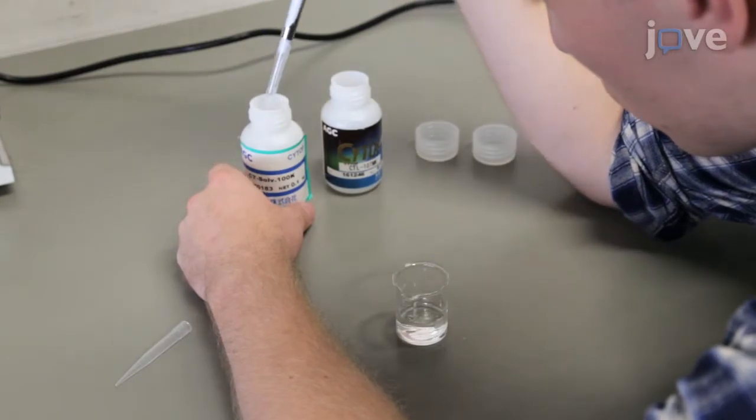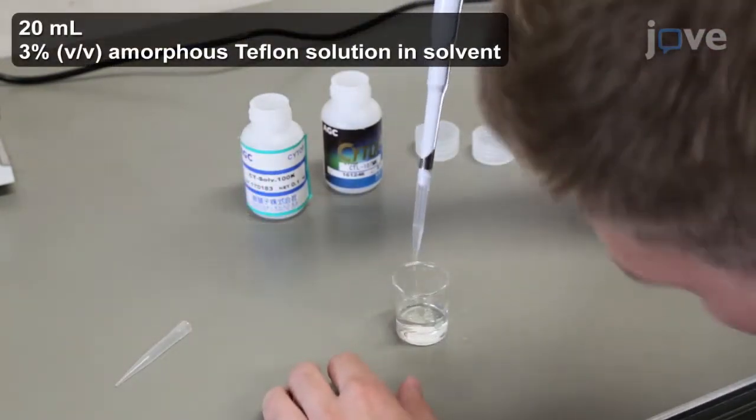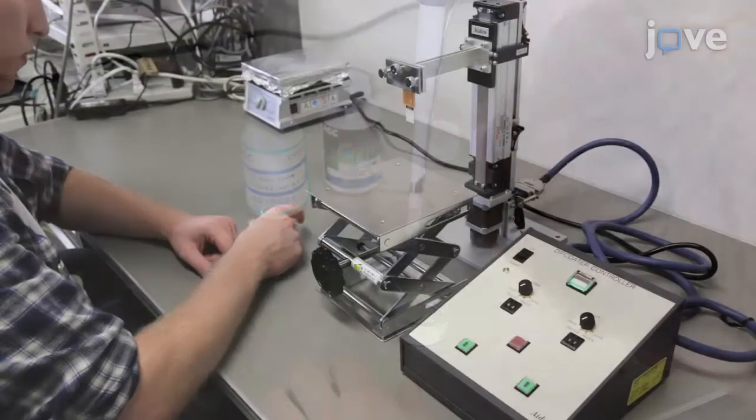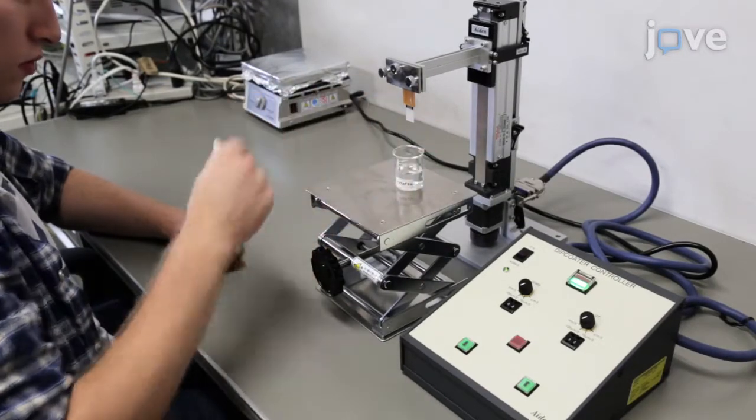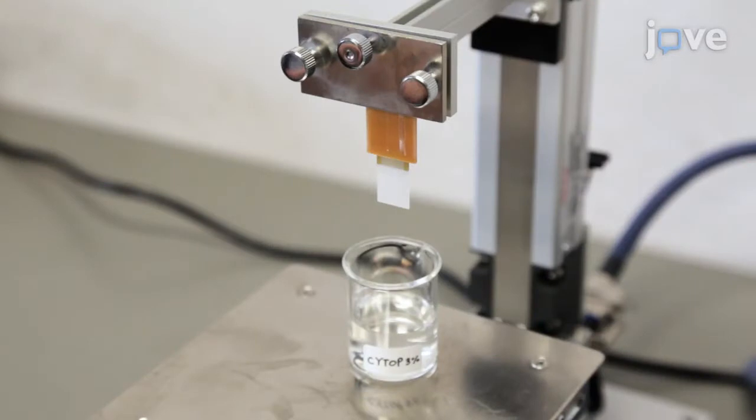Move on to prepare the amorphous Teflon material and solvent. Take the solution to the dip coater and put it in position for use. Ensure the device is mounted to immerse the atomization area.